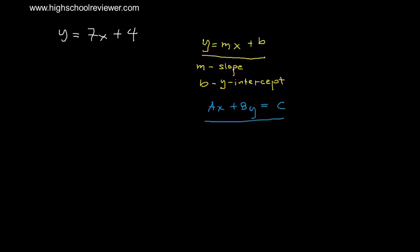As you can see, in ax plus by, x and y are on the same side. And the constant, which is c, will be left on the other side. This equation is of the form y equals mx plus b — this is the m and this is the b.